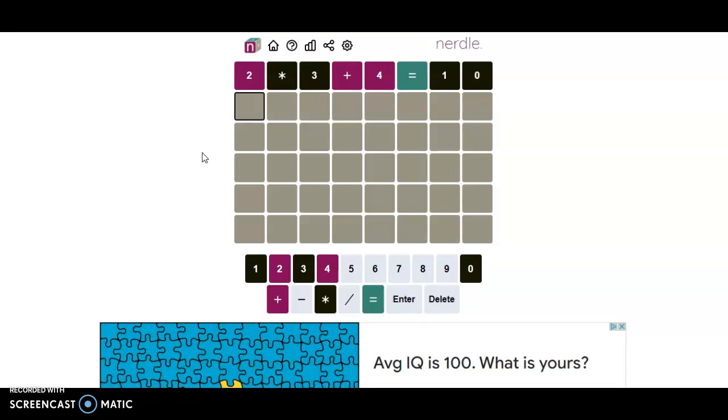Alright, so I think this will be one operation plus equation. So let's go ahead and do something like 40 plus 52 equals 96. That doesn't... just puts some numbers for us.